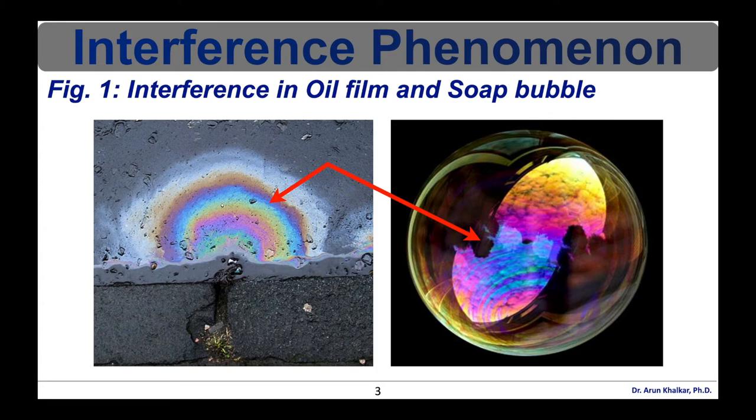Thus, when white light — which consists of a range of wavelengths — is incident on the film, certain wavelengths are intensified while others are attenuated. In the first picture, a colorful interference pattern is observed when light is reflected from the boundaries of the thin film, which is an oil film. In the second picture, the colors in the light reflected from a soap bubble are shown.